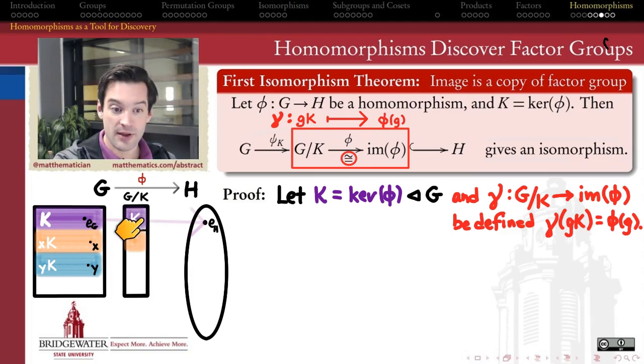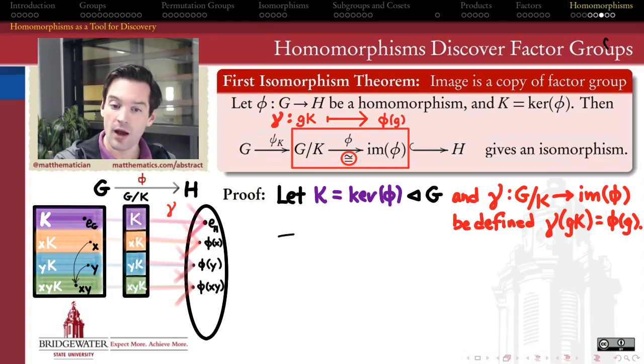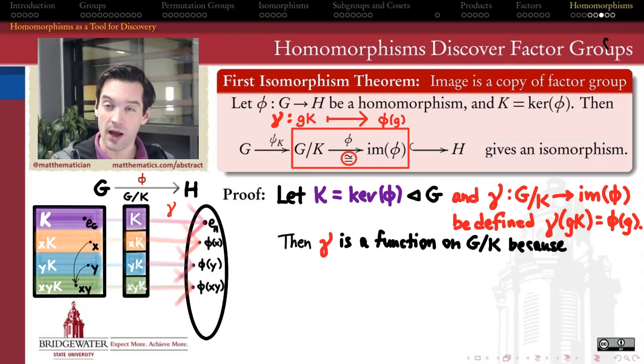Well, so we're going to think of the factor group G mod K. It's kind of living here in the middle, right? It's going to take every coset of K and think of it as a single element. That's how the quotient group works. And the first thing I want to do is try to convince myself of why gamma is even a function at all. Why is it even a well-defined function on the set of cosets G mod K?